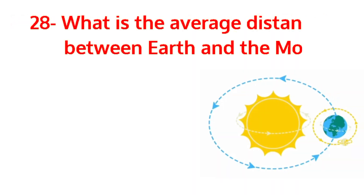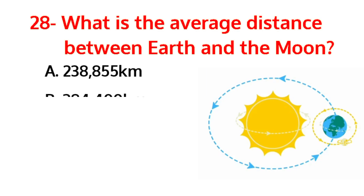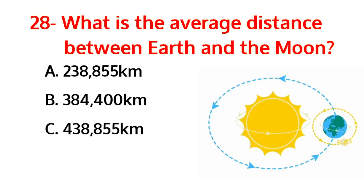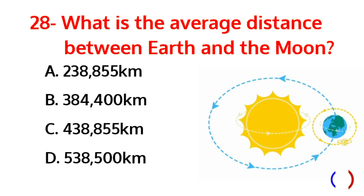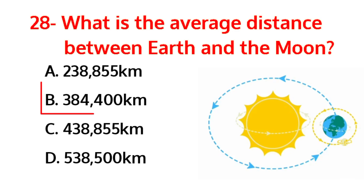What is the average distance between Earth and the moon? The correct answer is option B, 384,400 kilometers.